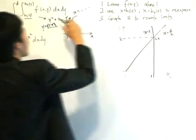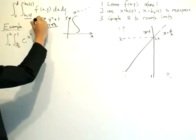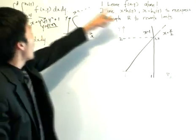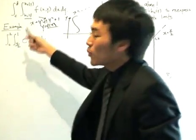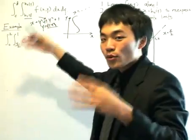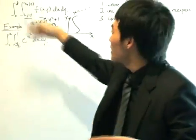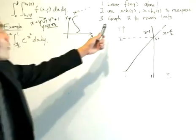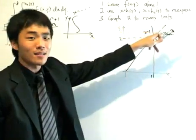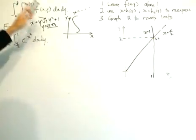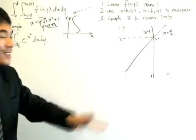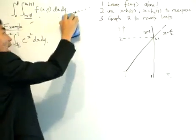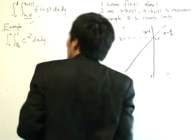That's why we let X equal to that expression and rearrange in terms of X. So if the limit is in terms of Y, put X equals to that and rearrange; if it's in terms of X, put Y equals to that and rearrange. Also, you possibly need to graph region R to rewrite the limits, because the region R is the base along the X-Y plane, and we need to sketch it to see what's going on and how to re-express the limits.